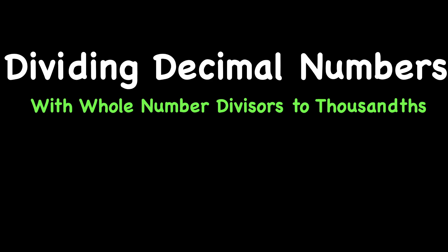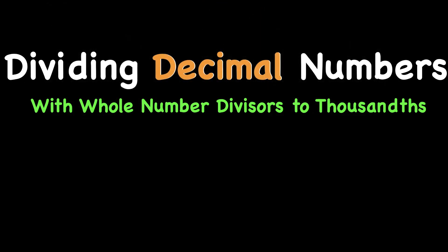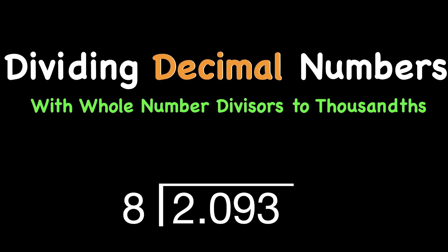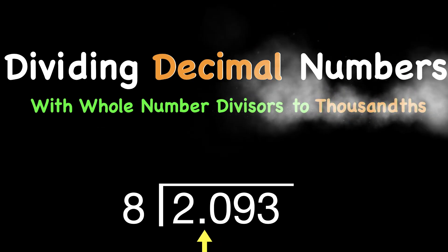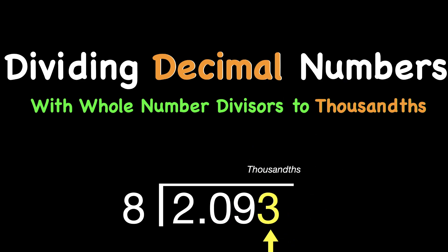Hey everybody, Mr. W here. Today's lesson is on division and we're dividing decimal numbers through thousands. Decimal numbers are numbers that have a decimal point in them, and thousands is a reference to the decimal place value, thousandths, that we're working to today.